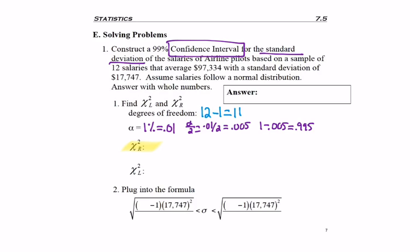So to find chi-squared right, we go to row 11, column 005, and hopefully you found 26.757.